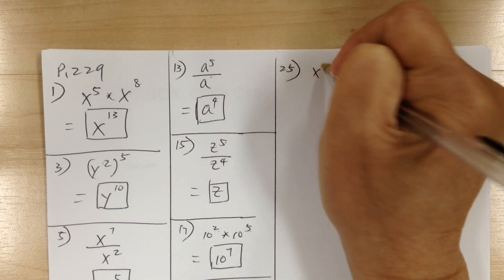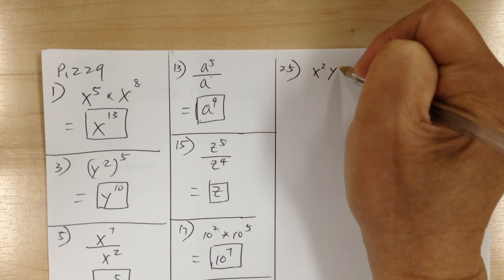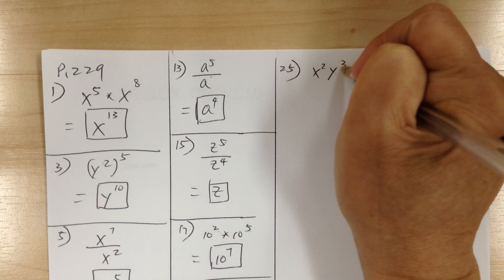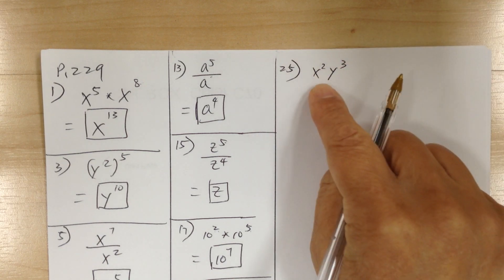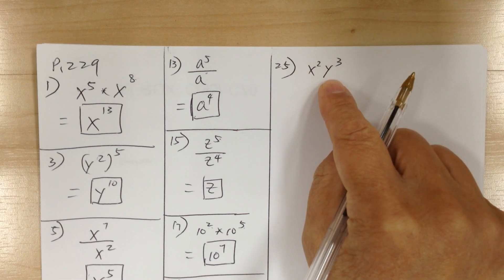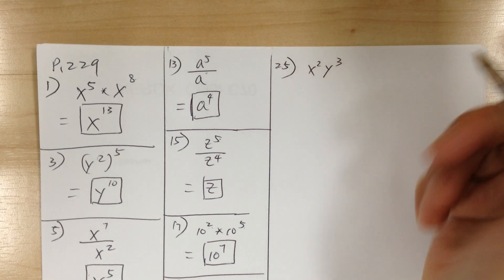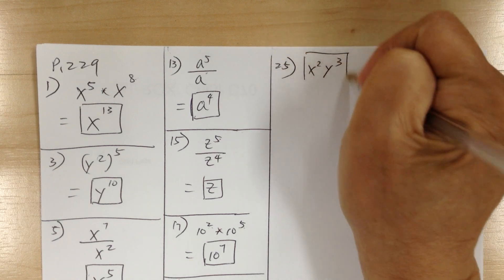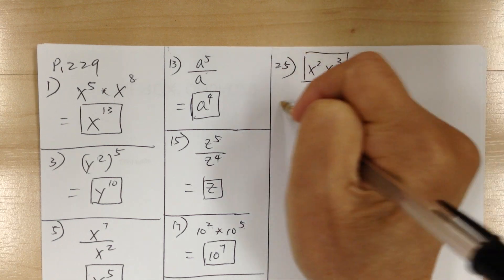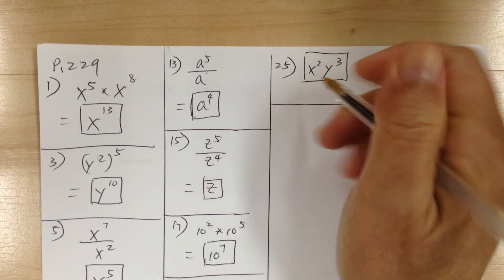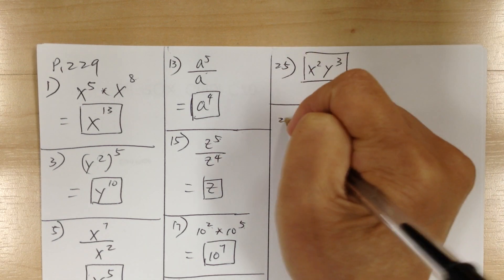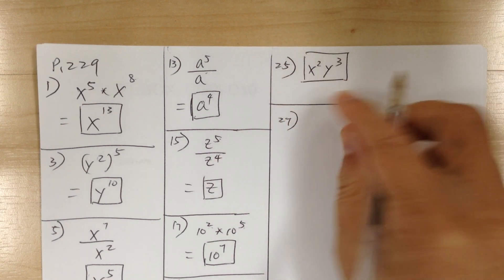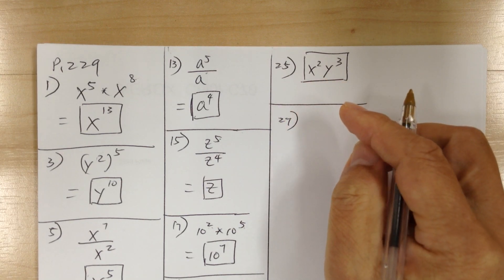Number 25, you have x squared times y to the 3. This one, the bases are different, so you cannot do anything to it. So just leave it — there's nothing you can do because the bases are different.